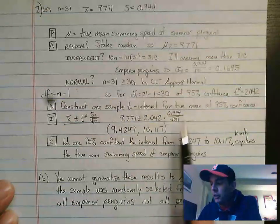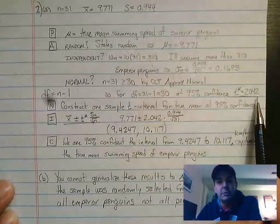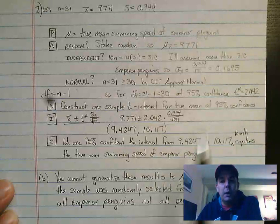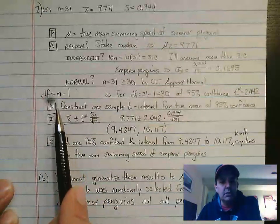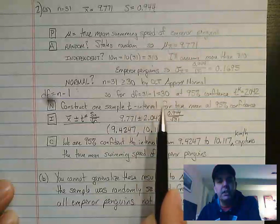However, to get the critical value here for 95% confidence, we're going to use a t star as opposed to a z star. The way we do that is degrees of freedom, which are sample size minus one. So in this case, we have 30 degrees of freedom.